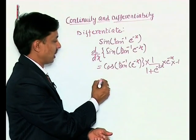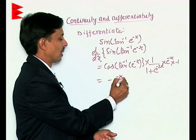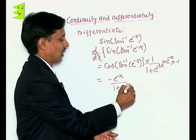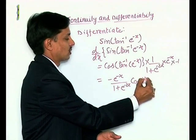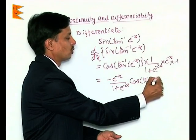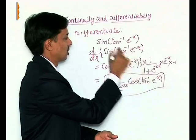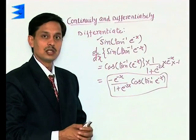So we can say the net answer is minus e to the power minus x upon 1 plus e to the power minus 2x, times cos of tan inverse of e to the power minus x. This is the differentiation of the required problem using the chain rule.